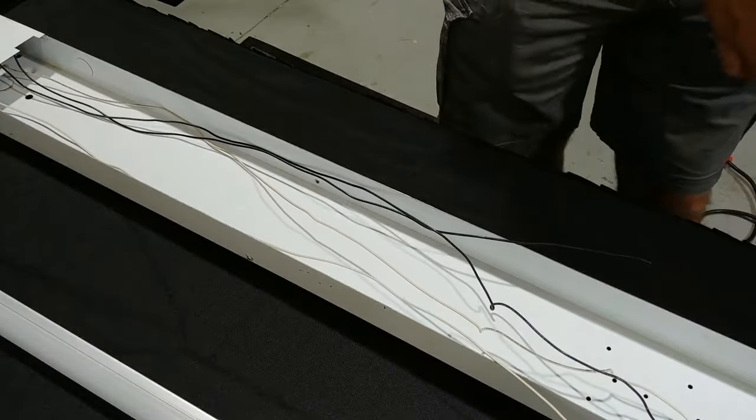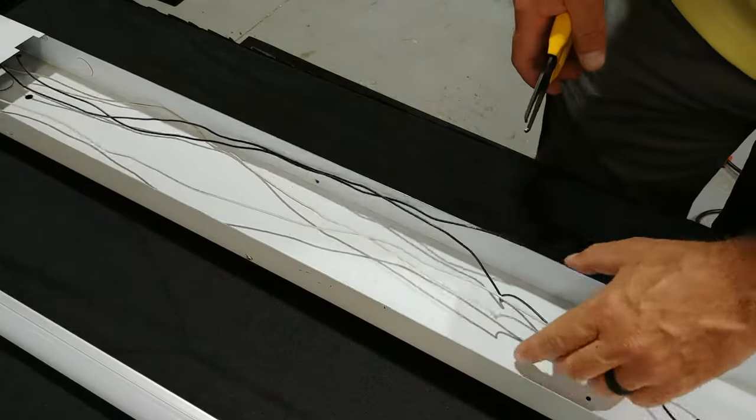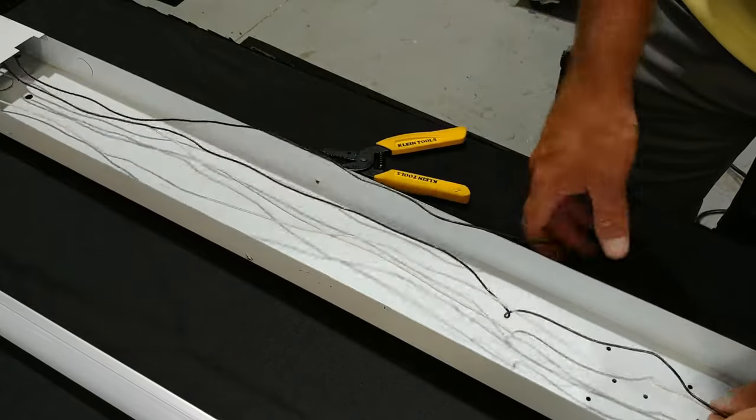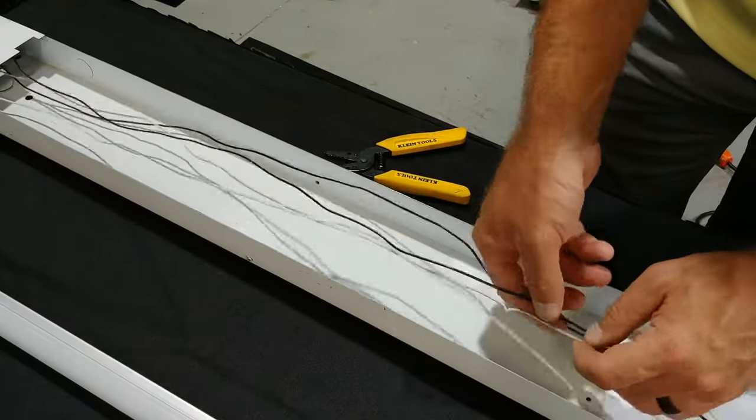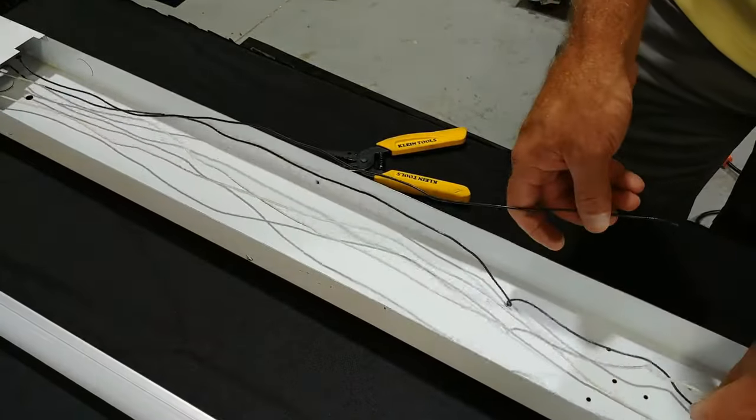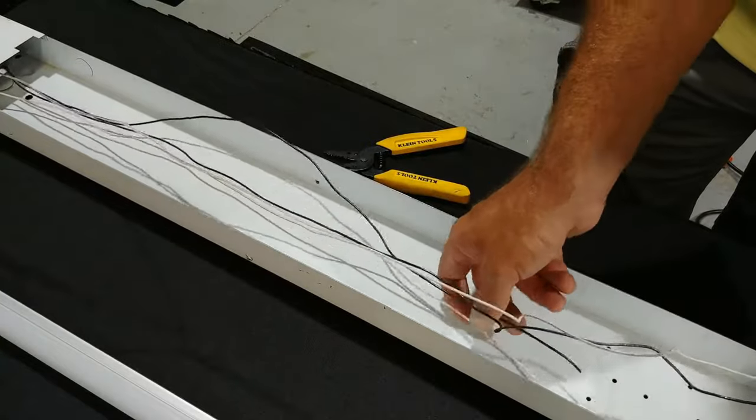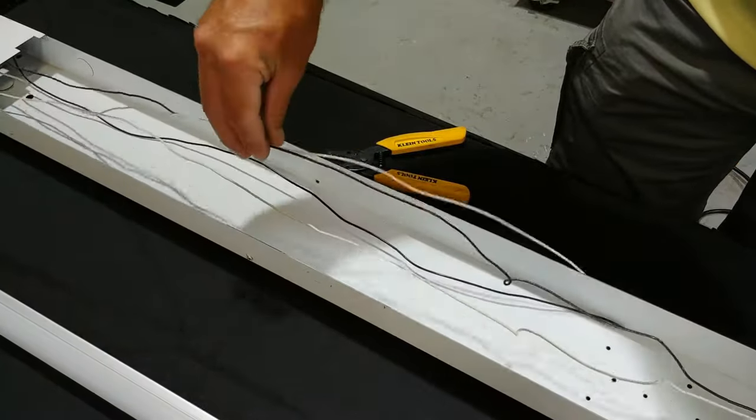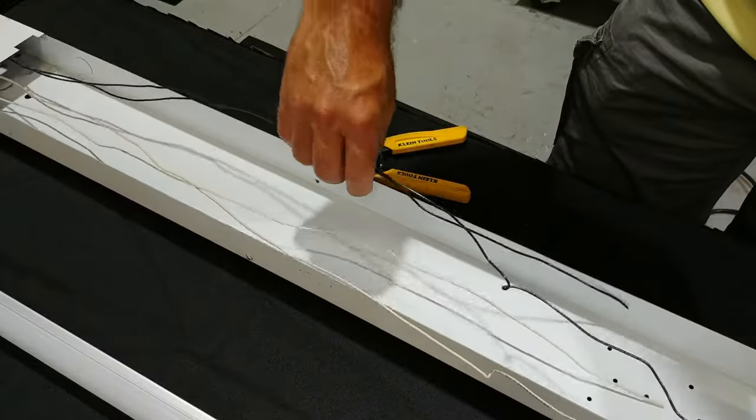What this will do is it'll just give us more room in our fixture. Once again, we are just eliminating the ballast and I would hope at this point you guys will already have your ballast taken out of the fixture because once again we are installing a ballast bypass LED tube.